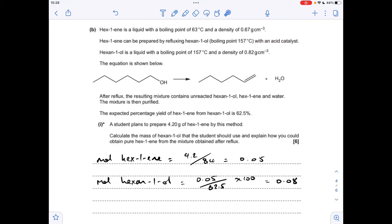To get the moles of hexan-1-ol we need, we need to scale up to factor in the 62.5% yield. The way I do that is divide the moles by the yield and multiply it by 100. That gives 0.08 moles of hexan-1-ol needed. All we need to do now is turn that into grams. That's just moles times Mr, 8.16 grams.